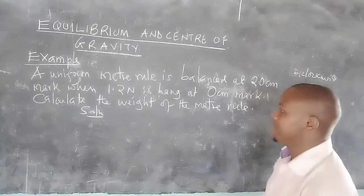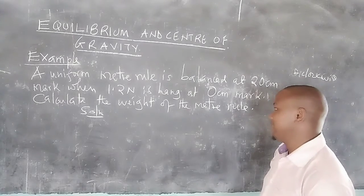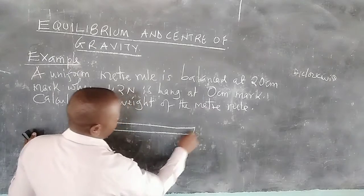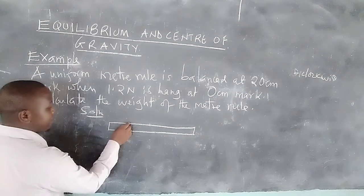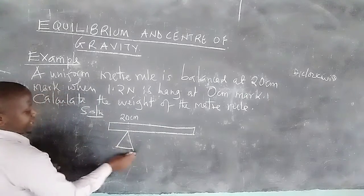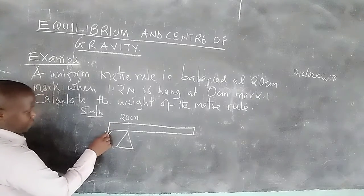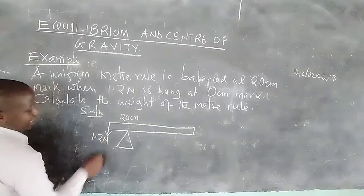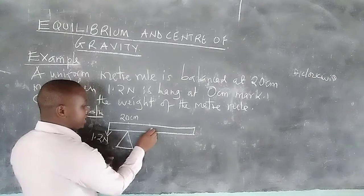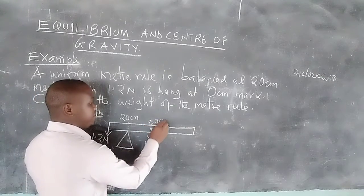In a question like this, it is very important to sketch the meter rule. The pivot is placed at the 20 centimeter mark. At the 0 centimeter mark, a force of 1.2 newtons is acting downward. Because the meter rule is uniform, its own weight acts through the center — the 50 centimeter mark.